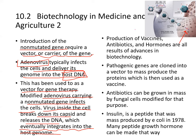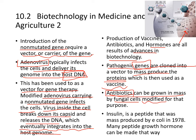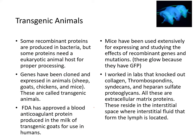Production of vaccines, antibiotics, and hormones are all results of advances in biotechnology. Pathogenic genes can be cloned into a vector and the proteins mass-produced to be used as vaccines. Antibiotics can also be grown in mass in fungal cells modified for that purpose — antibiotics are organic compounds, usually from fungal cells. Insulin, which is a peptide hormone regulating glucose levels, was first mass-produced by E. coli in 1978. Before that, porcine or pig insulin was used.